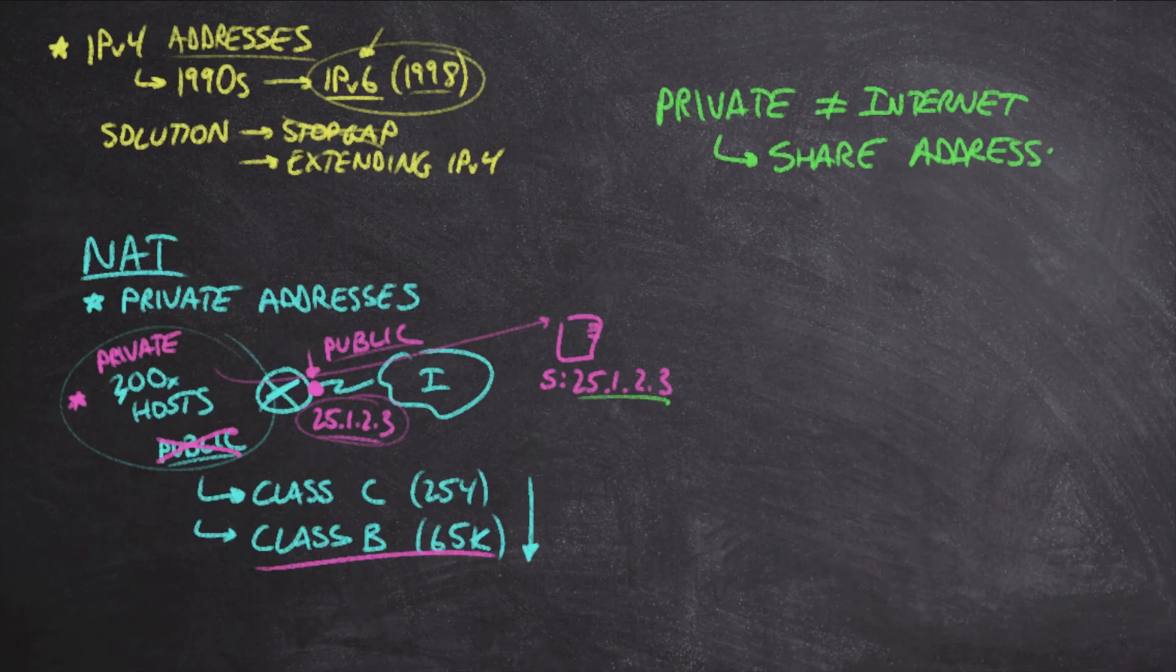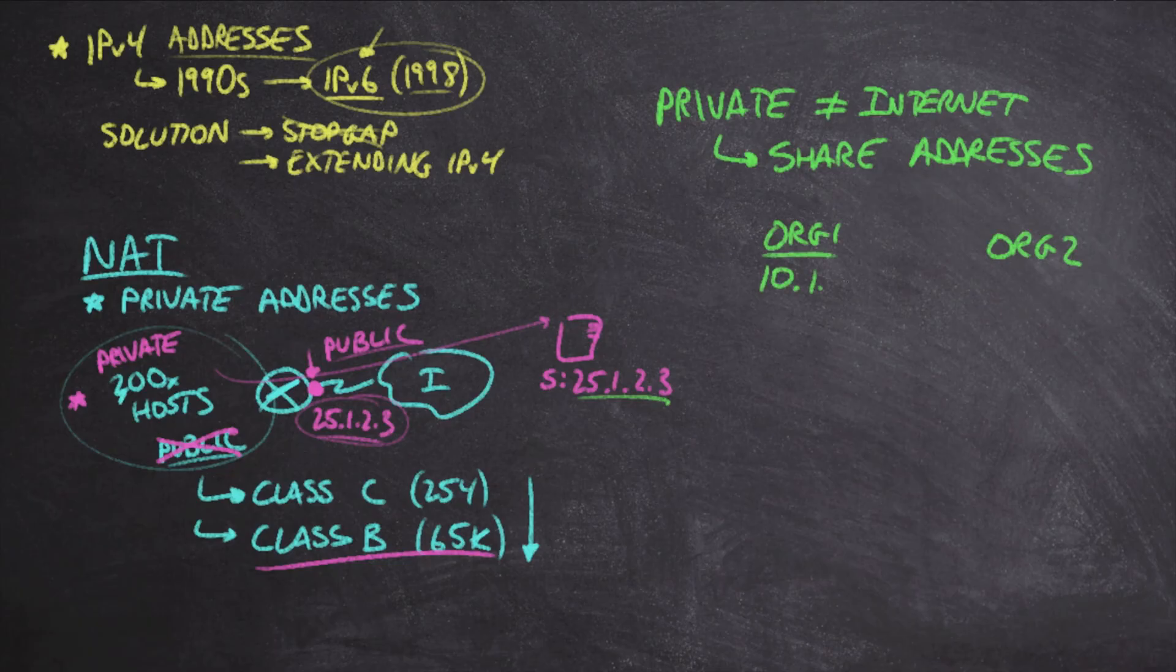In other words, I might have two different organizations, organization one and organization two, and I could have duplicate IP addresses. Organization one could be using the 10.1.1.0 subnet, let's say it's a slash 24, on their network.